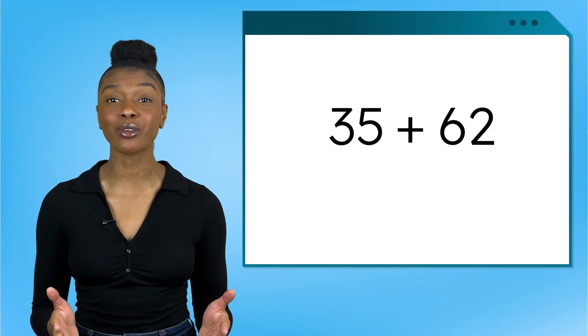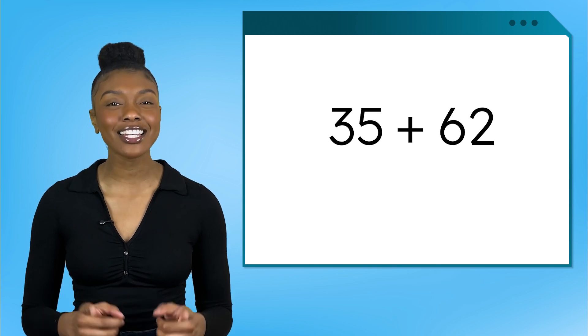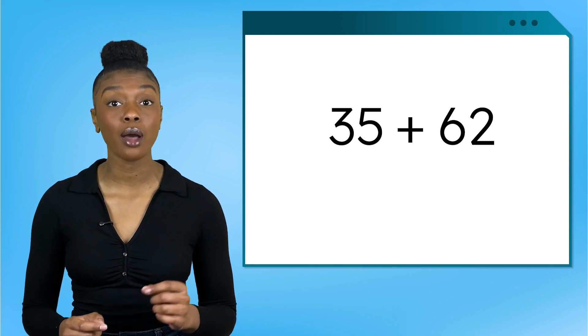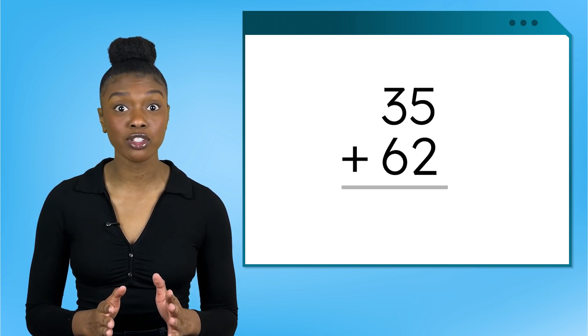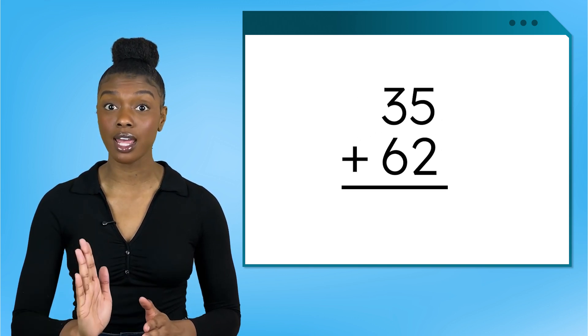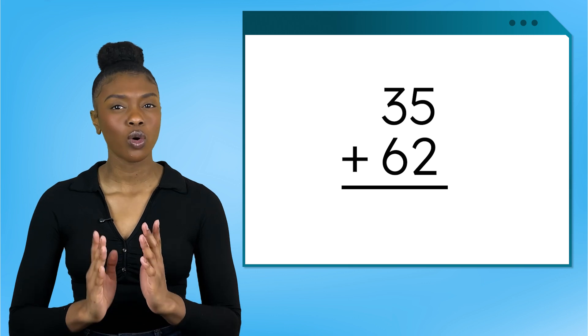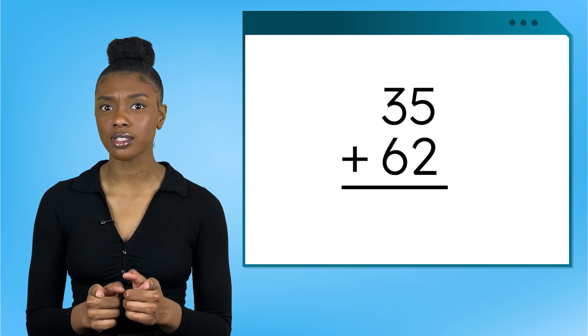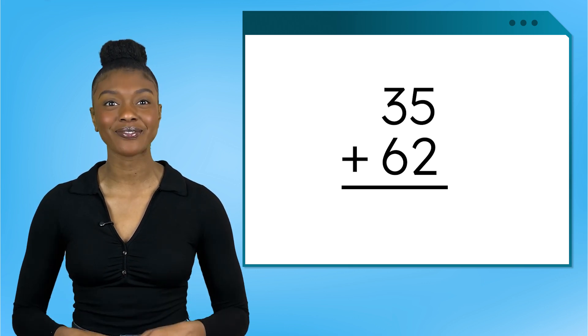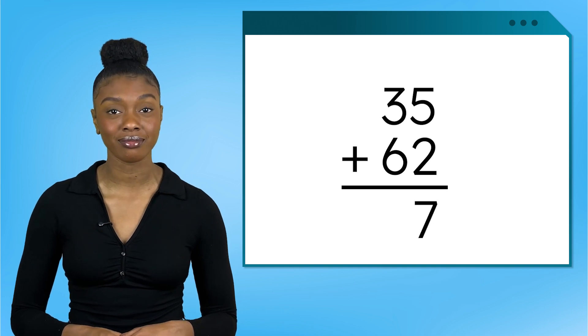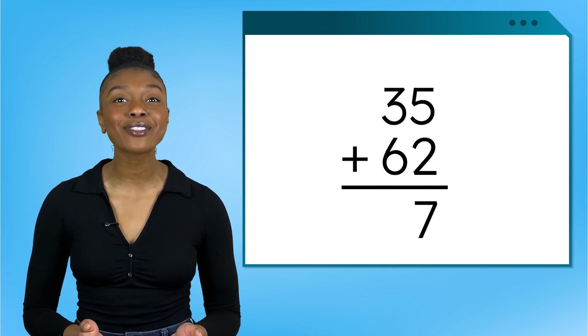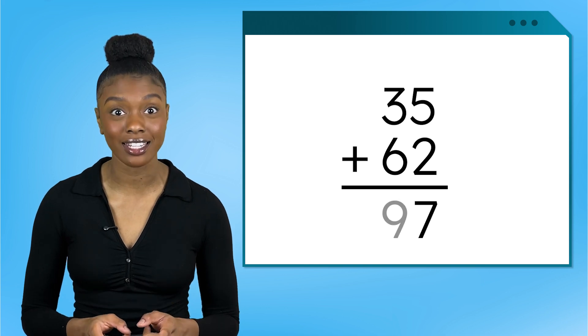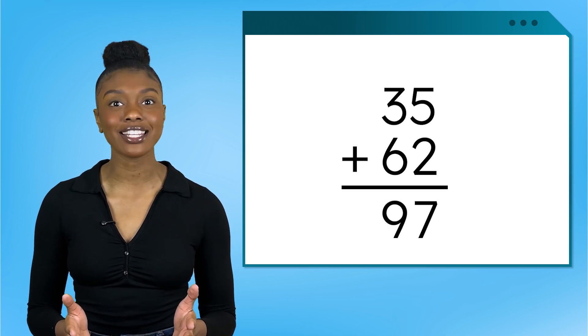I think we're ready for our quest. Let's use these strategies to solve 35 plus 62. Let's start by stacking our numbers vertically, lining up our 10s and 1s. What do you get when you add the 1s? Yes, 5 plus 2 equals 7. How about our 10s? Great work! 6 plus 3 equals 9. So our answer is 97.